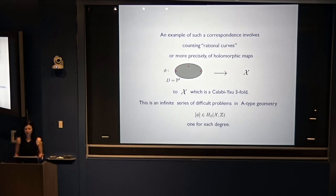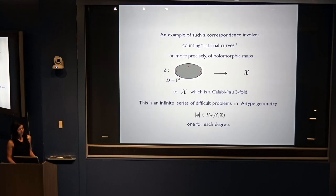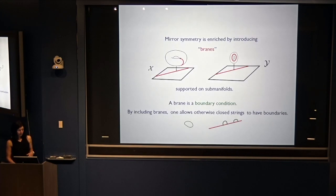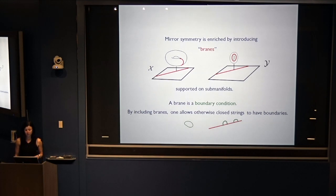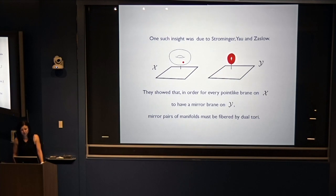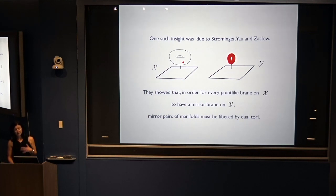An example of such a correspondence involves counting rational curves — more precisely holomorphic maps to X, a Calabi-Yau threefold. This is an infinite series of difficult problems in A-type geometry, one for each degree. In the mirror, one gets to reproduce all counts at once by computing periods of the top holomorphic 3-form. Mirror symmetry is enriched by introducing branes supported in a submanifold. By including branes, one allows otherwise closed strings to have boundaries. Branes turned out to be key objects in string theory, and asking how mirror symmetry acts on them led to deep insights. Strominger, Yau, and Zaslow showed that for every point-like brane on X to have a mirror brane on Y, the mirror pairs have to be fibered by dual tori.